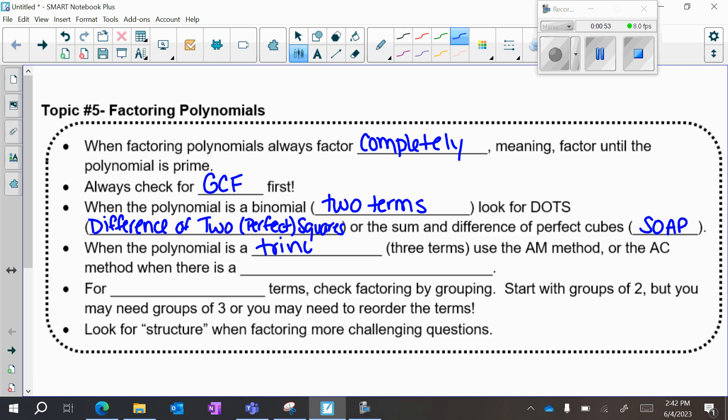When a polynomial is a trinomial, which means that it has three terms, you're going to look for the AM method or the AC method, and that's when there's a leading coefficient. And for four or more terms, you're going to check factoring by grouping.